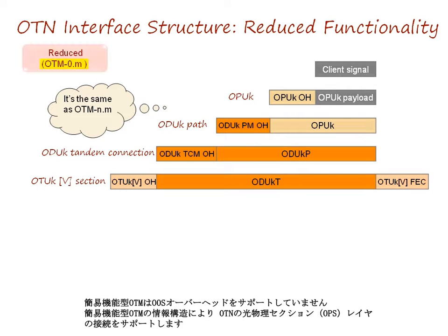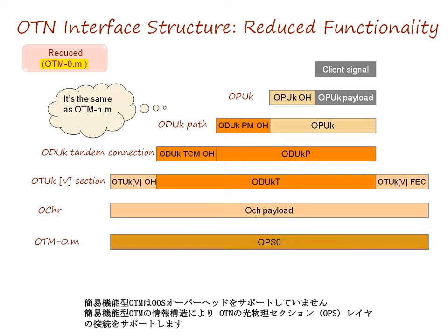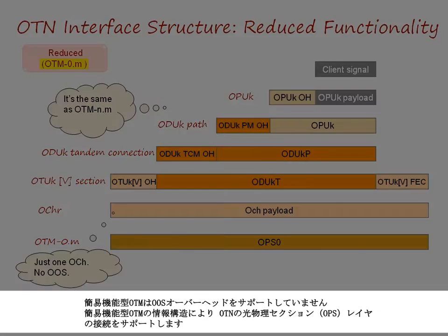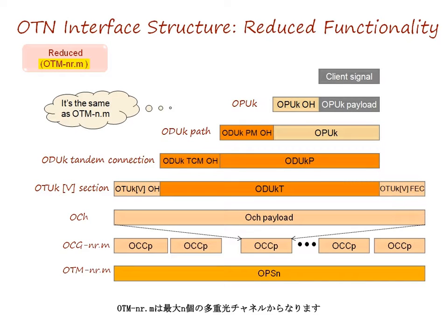OTM with reduced functionality does not support OOS overheads. The information structure of OTM with reduced functionality is used to support connections at the optical-physical section layer in the OTM. OTM-NRM comprises a maximum of N multiplexed optical channels.